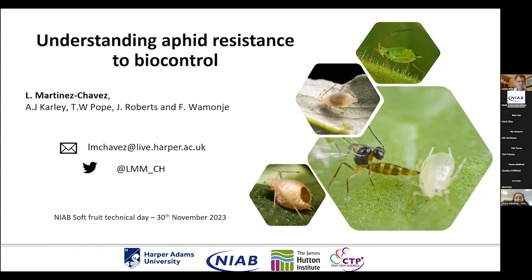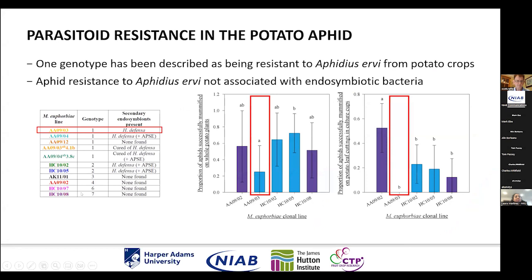Thank you Scott. I'm a third-year PhD student at Harper Adams working on aphid resistance to biocontrol. Aphids have been shown to exhibit physiological resistance to certain parasitoid species in different crops — it was first described for the potato aphid but has since been described in other species around the world. In the UK, the potato aphid can have at least three different populations within one genotype that can be resistant to Aphidius ervi — this was described ten years ago in Scotland. Resistance essentially means a lower parasitism proportion when aphids are attacked by the parasitoid.